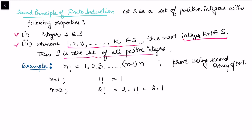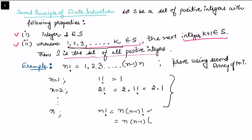Continuing in this manner, for a general n, computing n factorial requires all previous values up to n minus 1. When we expand n times n minus one factorial, we apply the induction step for n minus one factorial, then n minus one times n minus two factorial, and so on. This requires all previous steps, which is why we need the Second Principle of Finite Induction — an extension of the first.